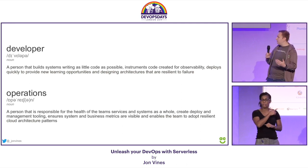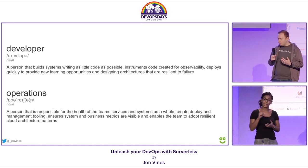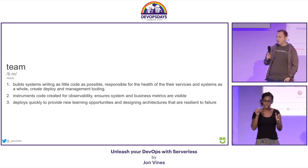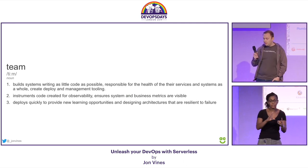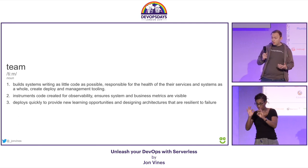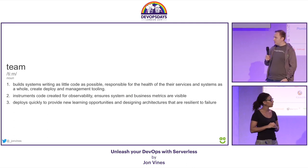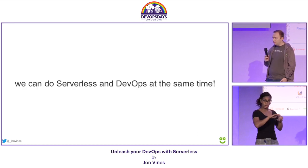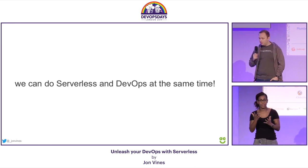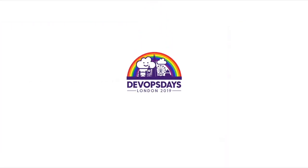Looking at these two definitions, you might think we're defining skill sets very specifically for developers and operations — but that's not what DevOps is about. DevOps is about breaking down silos and doing things together. So what we should actually be defining is our team: a group of people that build systems running as little code as possible, responsible for the health of their services, instrument code for observability, ensure metrics are visible, deploy quickly for learning, and design resilient architectures. Can we do serverless and DevOps at the same time? In my opinion, it's an emphatic yes. Our roles undoubtedly change, we have to learn new skills, but absolutely we can. Thank you very much.